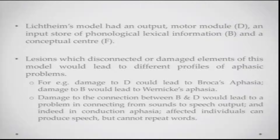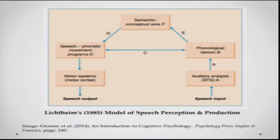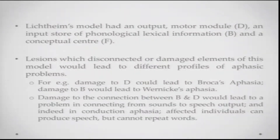Lichtheim's model has a motor output module denoted by D, an input store of phonological and lexical information denoted by B, and a conceptual center denoted by F. In addition to the speech phonetic movement programs (D) and the phonological lexicon (B), there is a semantic conceptual area (F) with connections to both D and B. The model specifies that lesions to different parts of the model, or lesions affecting the connections between these modules, could lead to different profiles of aphasia.